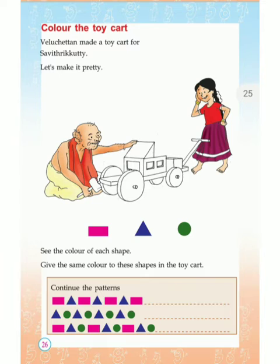Below you can see: continue the patterns. In the first pattern, first there is a rose rectangle, then a violet triangle, then again a rose rectangle, then again a violet triangle — rectangle, triangle, rectangle. What will be the next shape? There is also a second pattern: rectangle, rectangle, triangle. Continue the pattern.